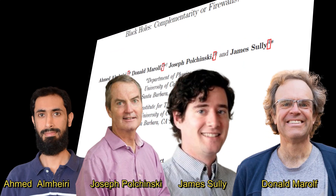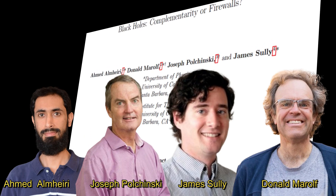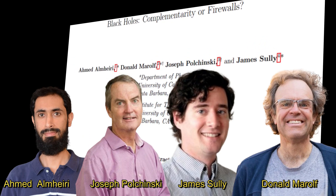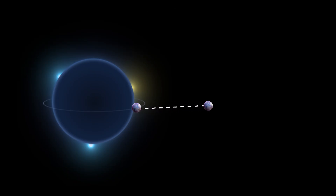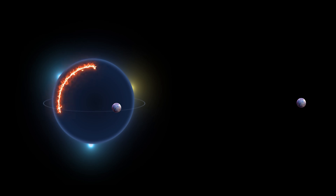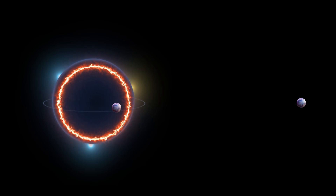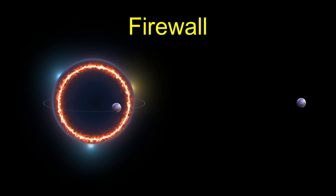In 2012, physicists Almheiri, Marolf, Polchinski, and Sully provided a resolution by saying that particles B and C are not entangled. They said that entanglement between two particles goes away when one of them falls into the black hole. But the entanglement between B and C can't just vanish into thin air — this loss of entanglement causes large amounts of energy to be deposited just inside the event horizon, creating what physicists call a firewall. Any observer falling into the black hole will be burned because of this firewall, and therefore the horizon will not stay smooth.